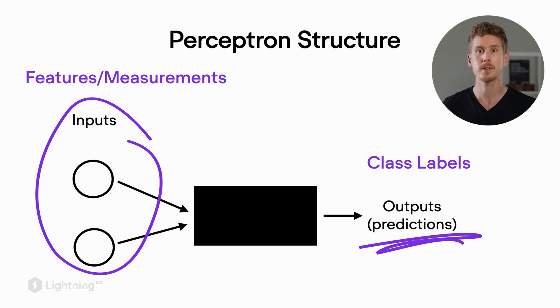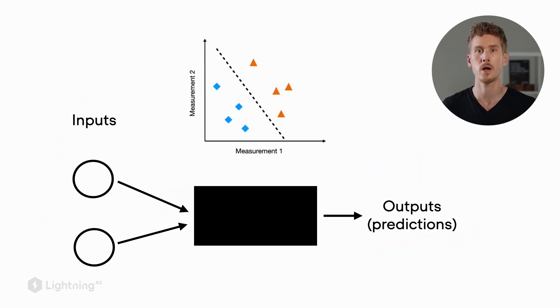And the number of inputs depends on the number of dimensions in our dataset. So in our two-dimensional dataset, where we have two measurement variables or feature variables, we have two input nodes to this perceptron. And in machine learning terms, we often refer to these measurement or feature variables as x. So feature one would be x1, and feature number two would be x2.